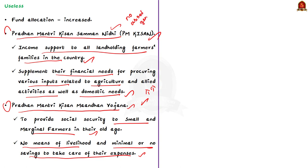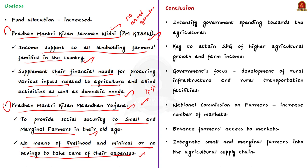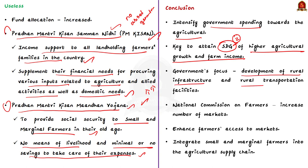Before concluding, let us see the suggestions given by the author. India has to intensify government spending towards agriculture because it is the key to attaining Sustainable Development Goal 2 of higher agriculture growth and farm income. The author suggests the government should focus on the development of rural infrastructure and rural transportation facilities. Also, as suggested by the National Commission on Farmers, the number of markets should be increased.